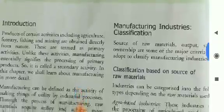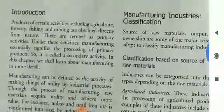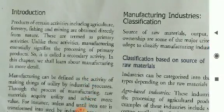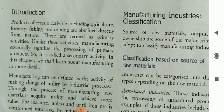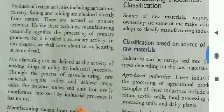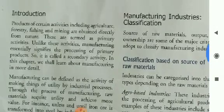This chapter will enable us to know much more about the major industries located in the world. The manufacturing activities are done in the industries. Its classification, size, location, raw materials — all such types of things will be discussed in this chapter.